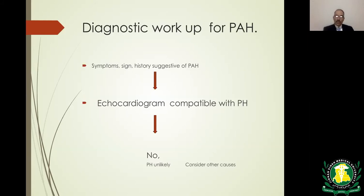The two most common causes of pulmonary hypertension are left heart failure and pulmonary diseases. If echo shows elevated pressure but left atrial size is normal, WHO class 2 is excluded. The next step is chest X-ray to assess for COPD or interstitial lung disease, and pulmonary function tests for the same reason. If neither shows COPD or ILD, proceed to the next test.